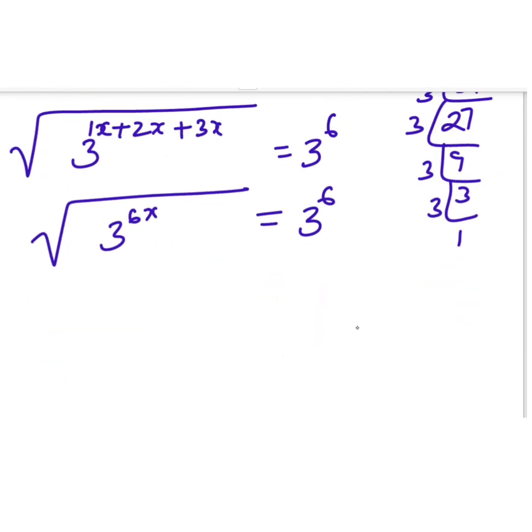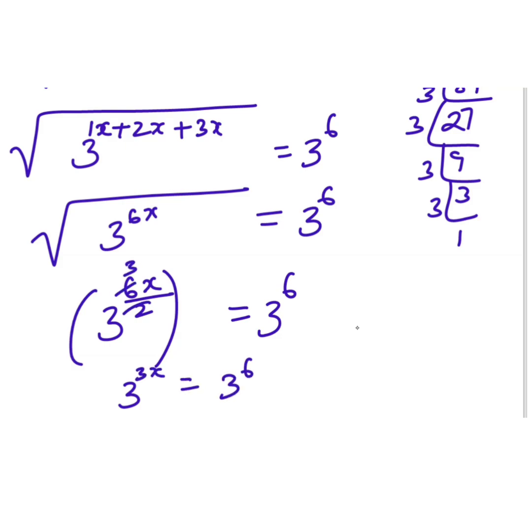We can write this as root is nothing but 1 by 2, to the power of 1 by 2, that will be divided by 2. Then it equals 3 to the power of 6. Here we have 3, 1 times 2 is 3 times, it will become 3x equals 3 to the power of 6.